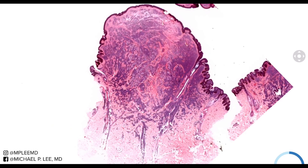These solitary mastocytomas are a rare variant of mastocytosis. They typically account for about 10 to 20% of cases of cutaneous-only mastocytosis, and they are almost exclusively found in children. The most common locations are the trunk and the wrists.